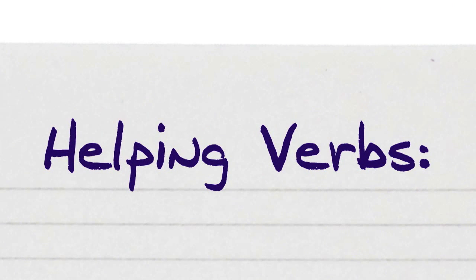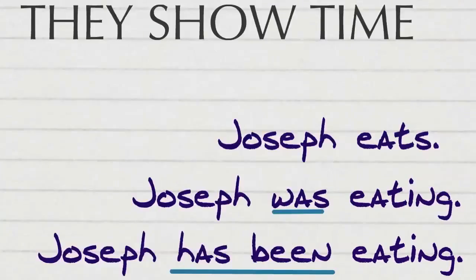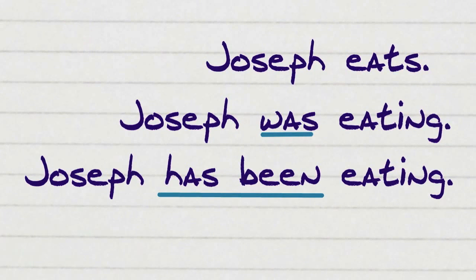There is also another type of verb called helping verbs. Helping verbs show time. For example, the verb here is to eat. 'Joseph eats' shows how Joseph eats at the present time. 'Joseph was eating' puts the action into the past. 'Joseph has been eating' shows that Joseph has been eating and may still be eating.